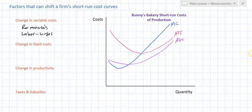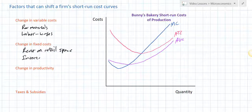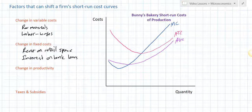Let's say that instead of variable costs changing, only fixed costs change. Fixed costs include things like rent on retail space — so Bunny has to pay rent for the space in which she operates her bakery. It could also include interest on bank loans. Assuming Bunny took out a loan to buy her ovens and some of her raw materials to start her business, if the interest she has to pay on those bank loans changes, there will be no change in her variable cost. It won't cost her more or less to produce additional units of output. Rather, it will only affect her fixed costs.